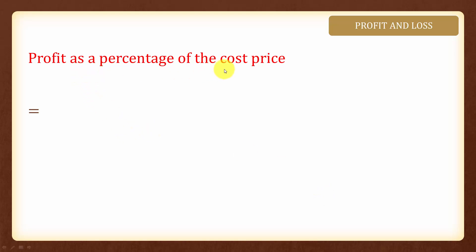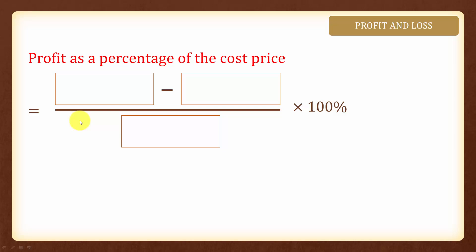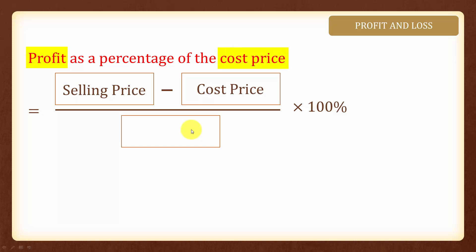Profit as a percentage of the cost price is equal to: profit, which is selling price minus cost price, as a percentage of the cost price means it is over the cost price. And as a percentage, we will have to multiply it by 100%.